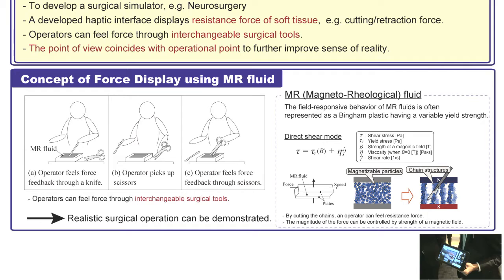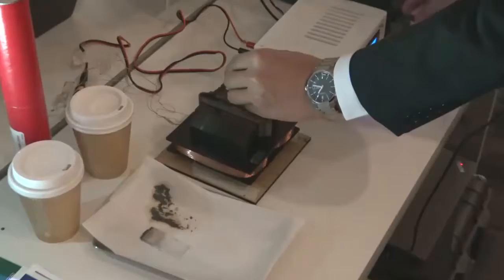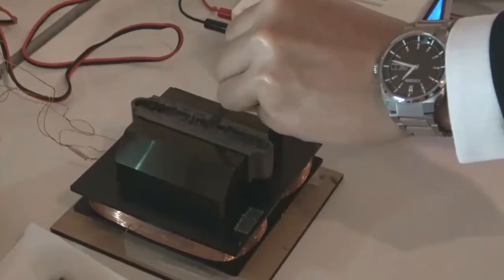So, an encounter-type haptic interface using Emerald Flu is one solution to solve this problem. Here is the Emerald Haptic interface using Emerald Flu. By controlling the extra magnetic field, it changes its viscosity, so you can feel the changing resistance.